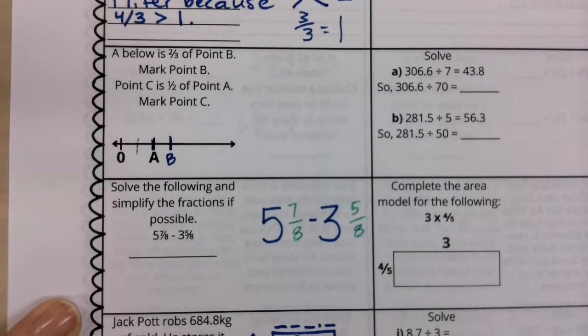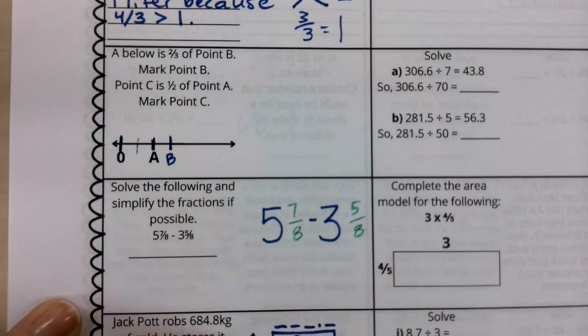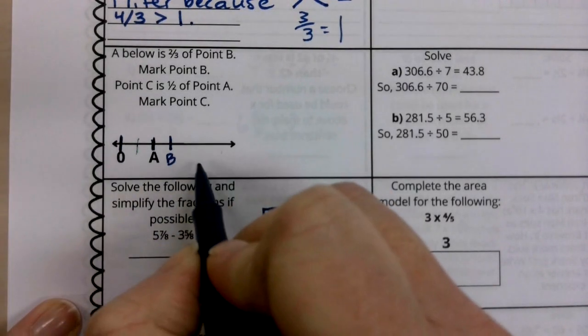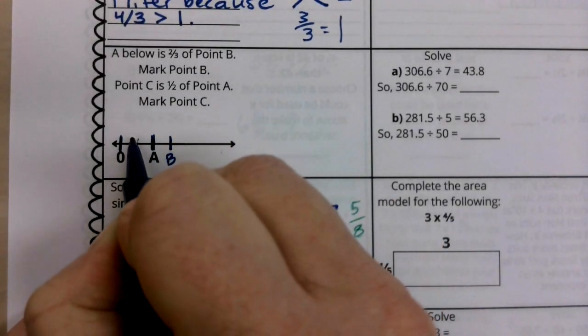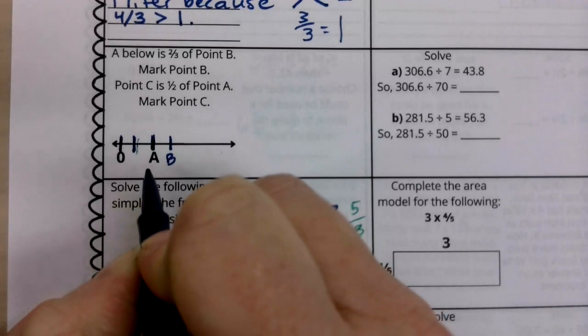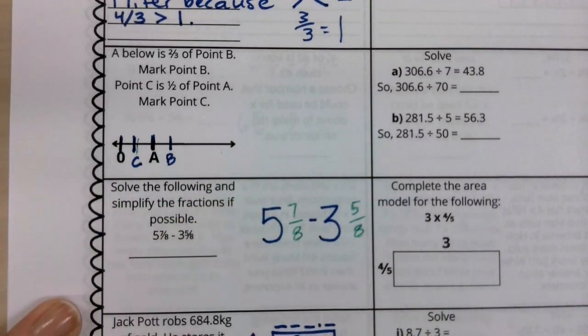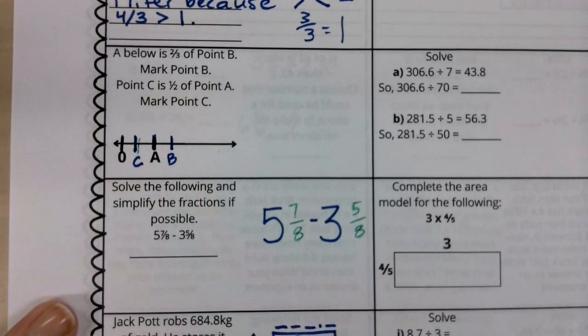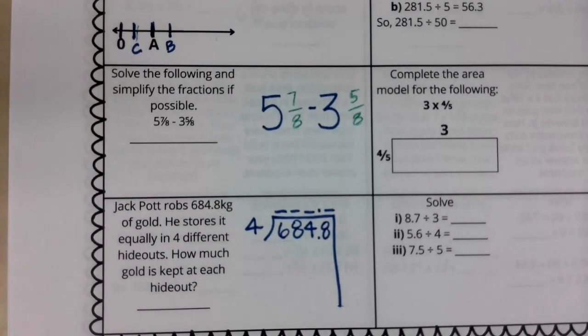Now, the next thing we're told is that point C is one half of point A, right? So if I have zero here, if I have technically like one here at A, we are going to put this as C, it's going to be right in the middle between zero and A. That's all we have to do for that is we're really just thinking about like a number line and marking where those fractions would be.